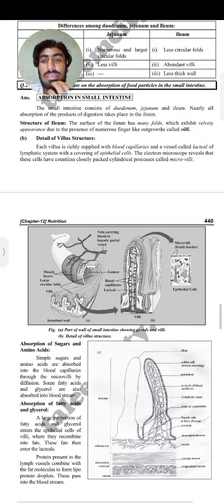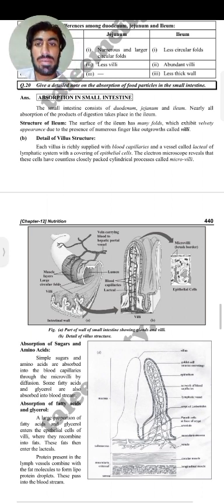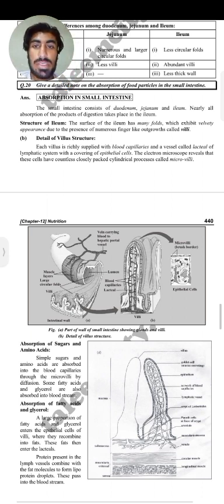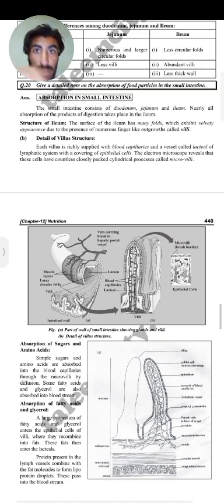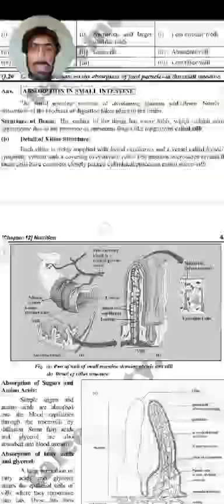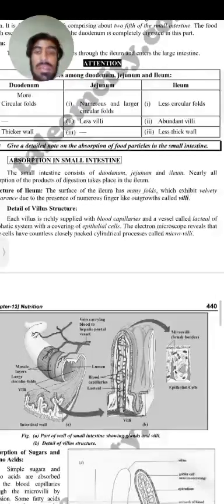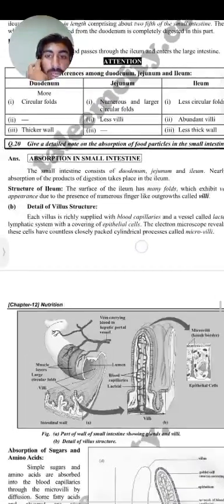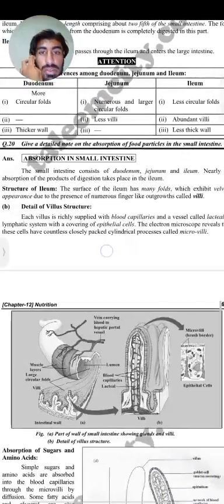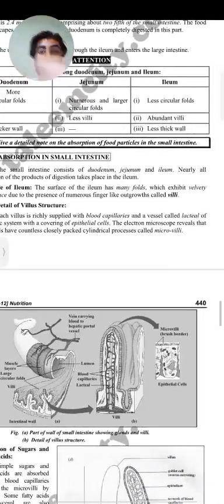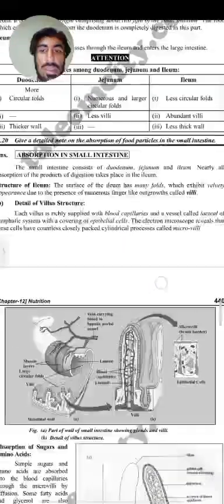Assalamu alaikum friends, welcome back to my channel. Today we are watching a video about absorption in the small intestine. The small intestine consists of the duodenum, jejunum, and ileum.